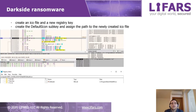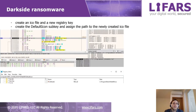The malware creates an ICO file and a new registry key. Under that registry key it will create the DefaultIcon subkey and assign the path to that ICO file. It does this because it wants all encrypted files to have a specific icon.